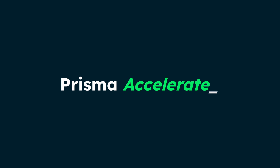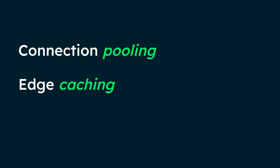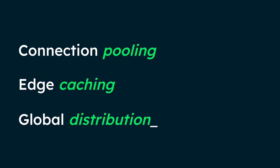You can further increase performance with Prisma Accelerate. For production applications, Prisma Accelerate offers connection pooling, which improves MongoDB connections in serverless environments; edge caching, which reduces database load for frequent queries; and global distribution, which decreases latency for users in different regions through edge caching.